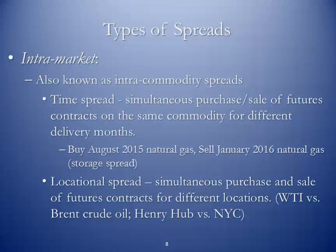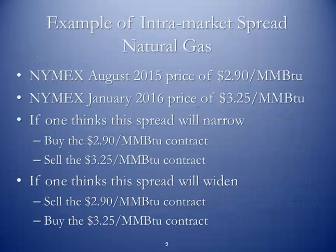We also have locational spreads — the simultaneous purchase and sale of futures contracts for different locations. For instance, in terms of crude, we could use WTI versus Brent crude pricing. For natural gas, we could use Henry Hub versus New York City.